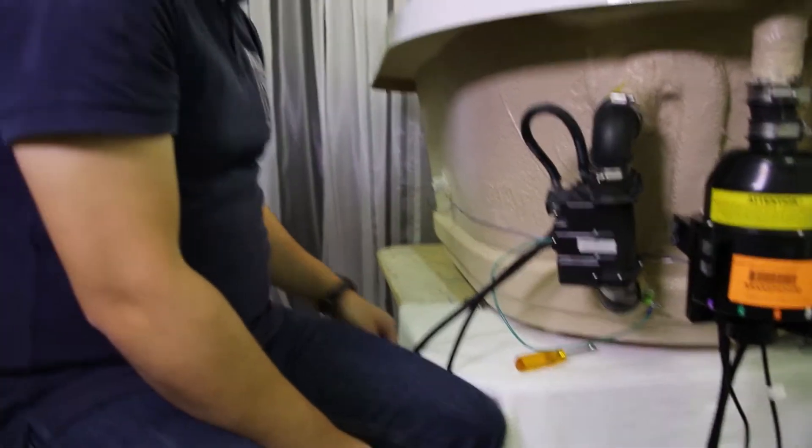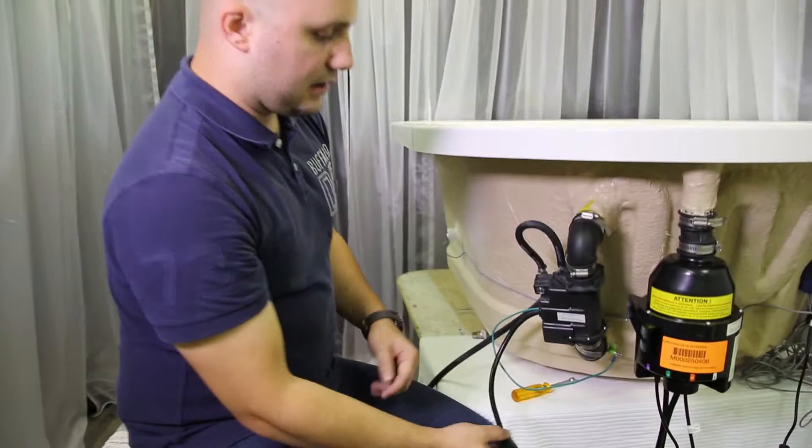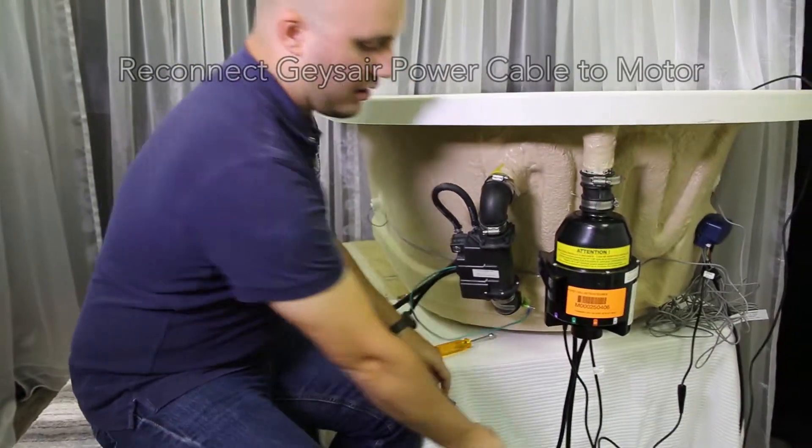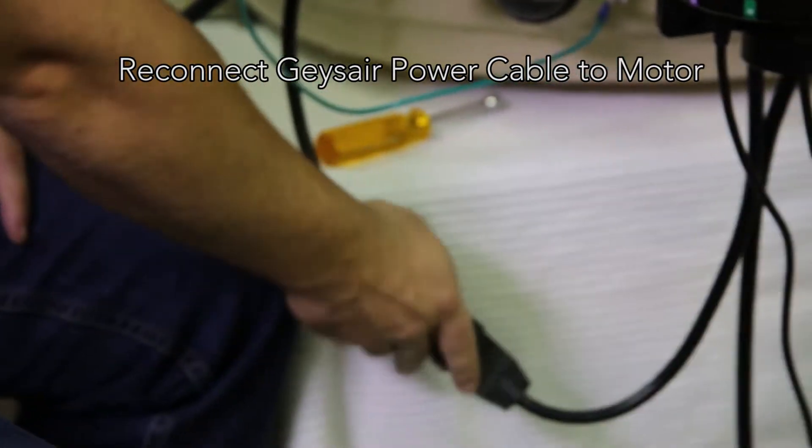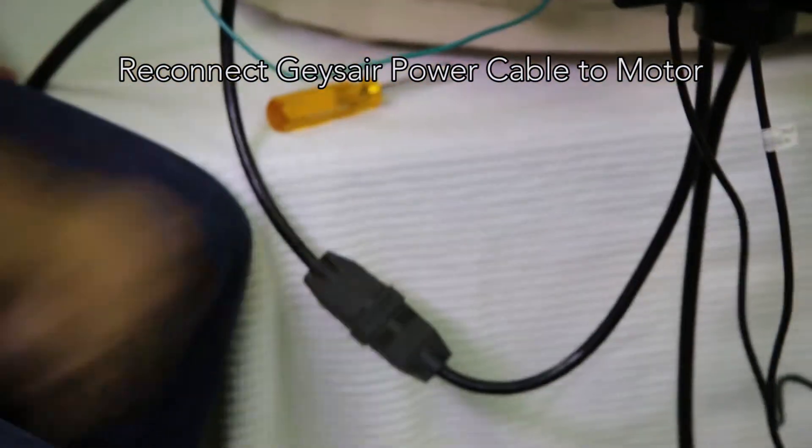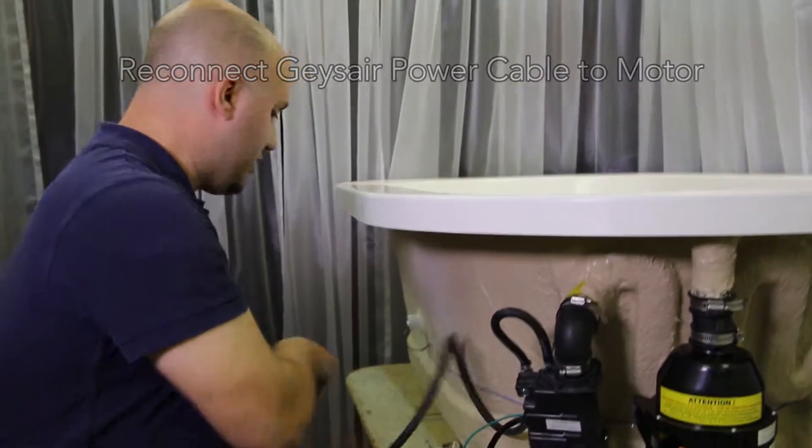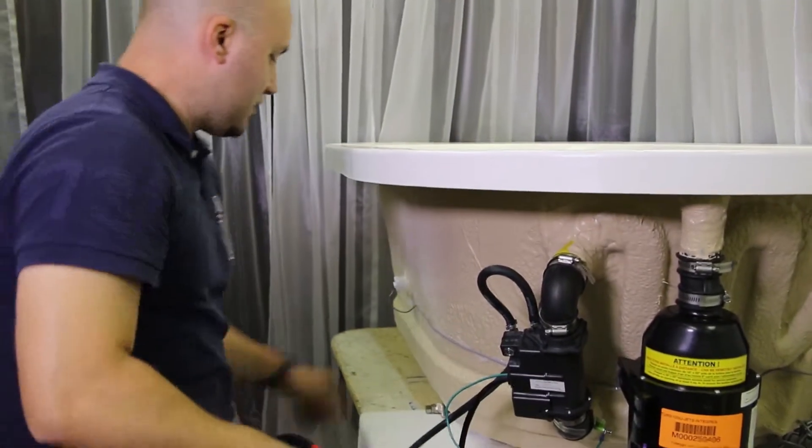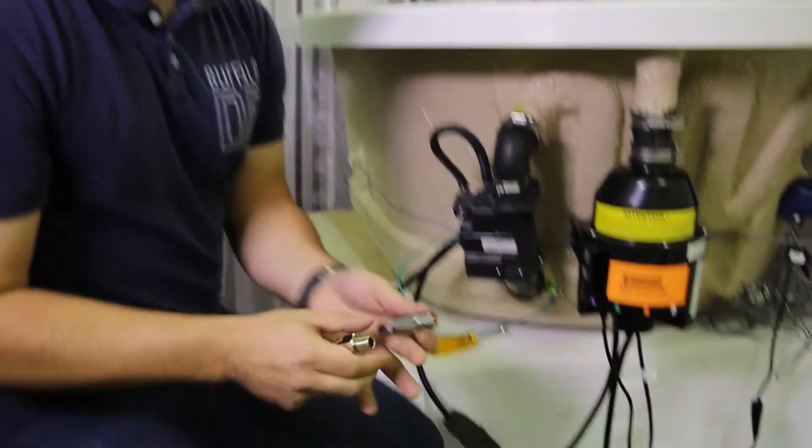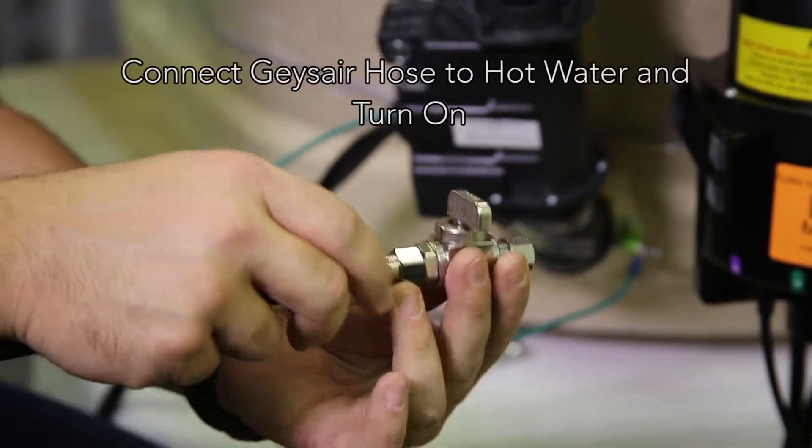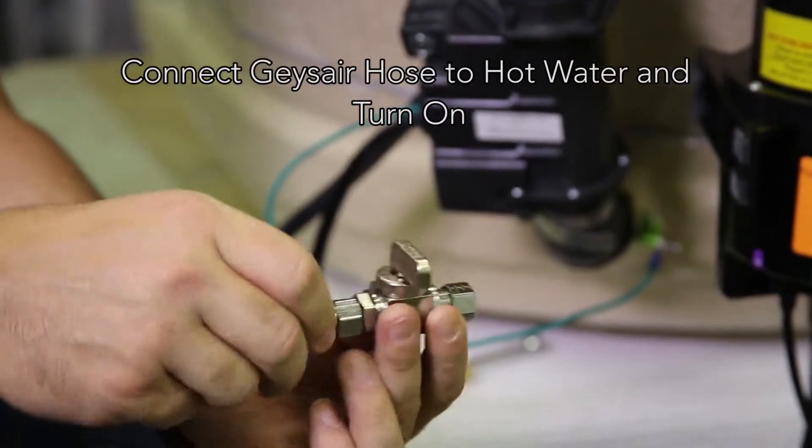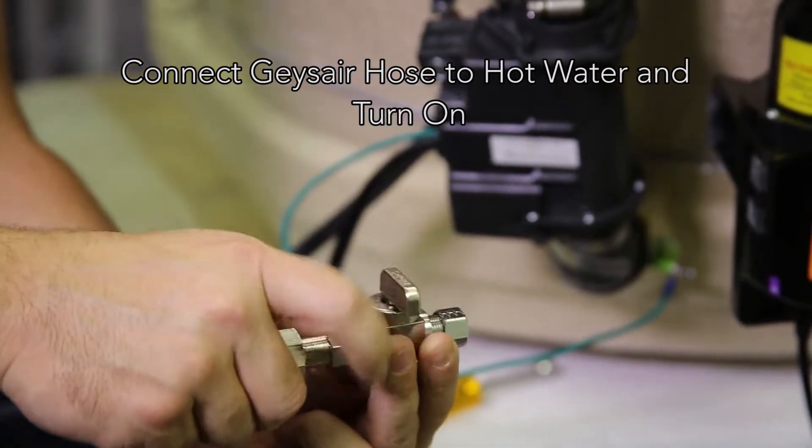The only thing left now is reconnecting the power cable to the motor like this. Remember, your power is still off. Then you would bring your hose back, your new hose. Imagine this is your fixed valve. You would just tighten it down like that.